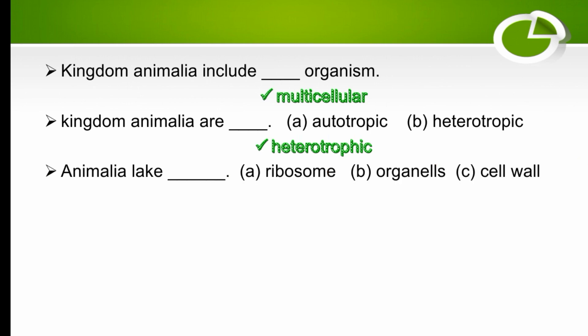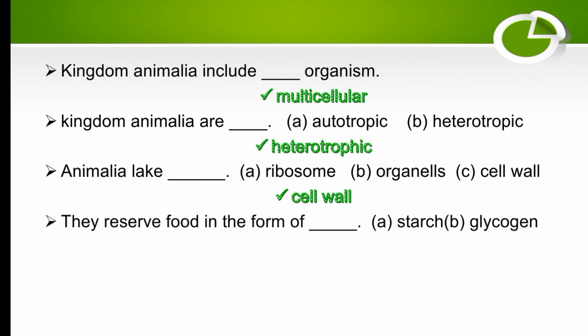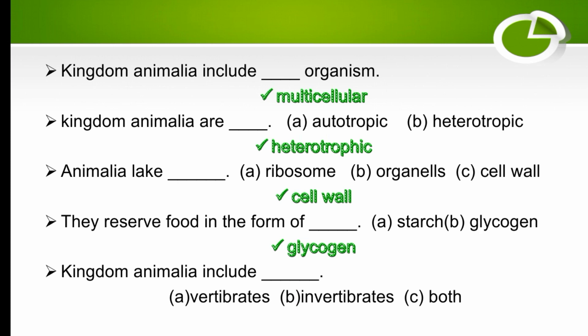Animalia lack a cell wall — cell wall is absent in Animalia. Animals store reserve food in the form of glycogen — the right option is glycogen.